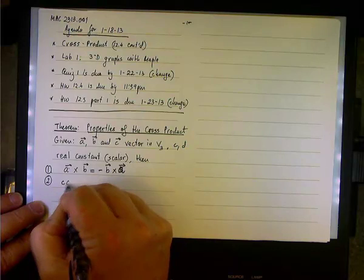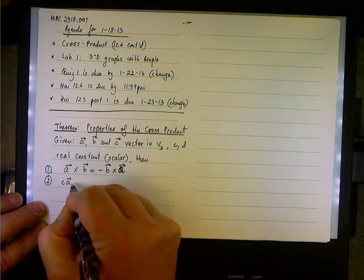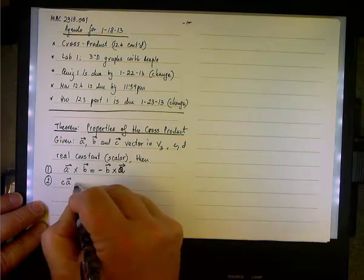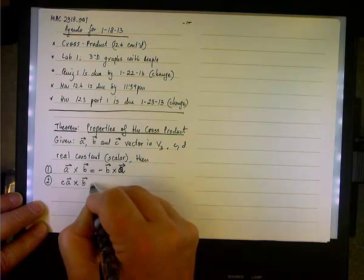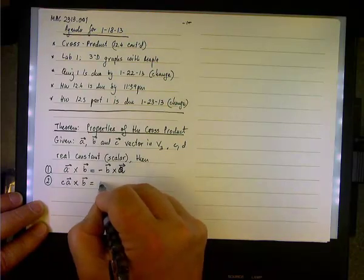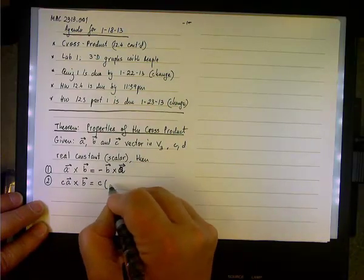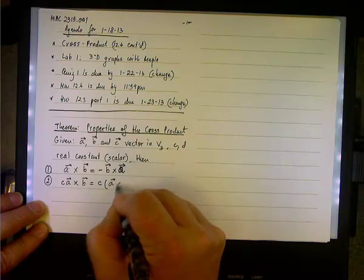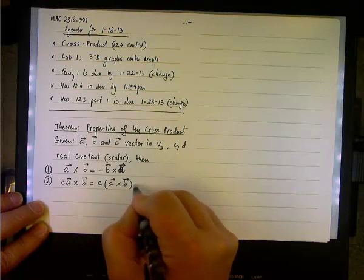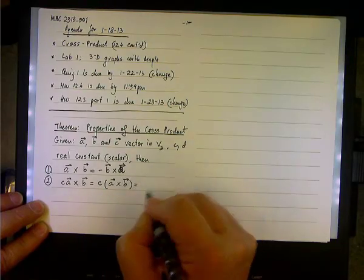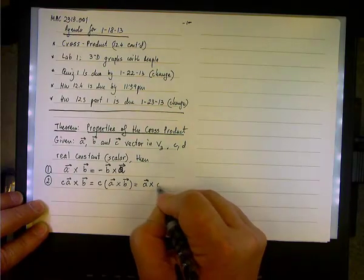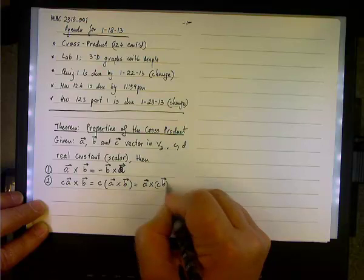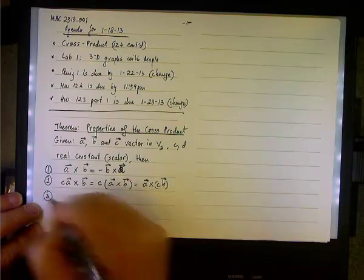Okay, two. If you have a scalar or a constant c multiplying or scaling vector a, and you cross it with b, then the constant is associative. So it would be c multiplying the vector a cross b, or you can write it, if you choose to do so, as the vector a cross multiplying the scale vector cb, like so.